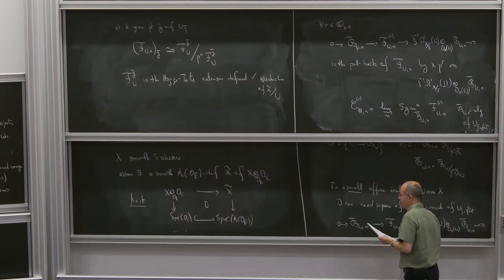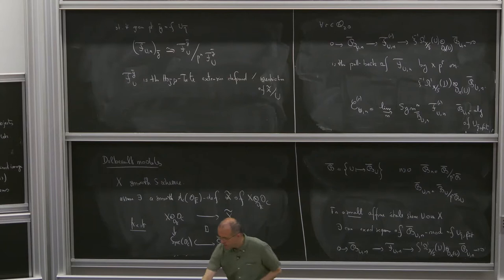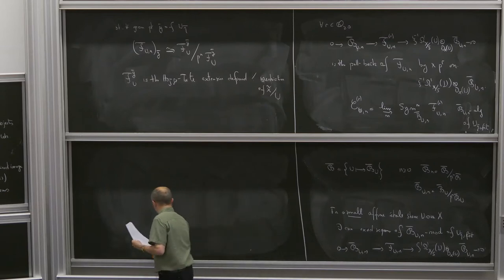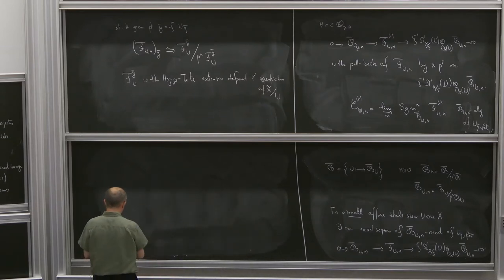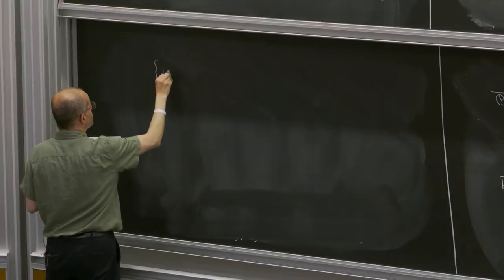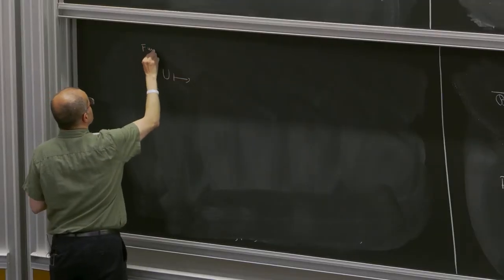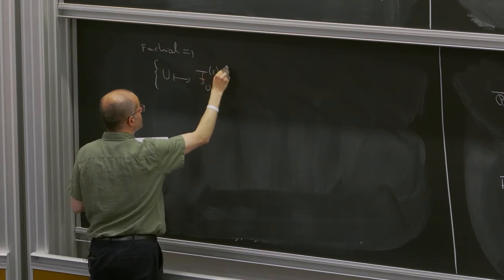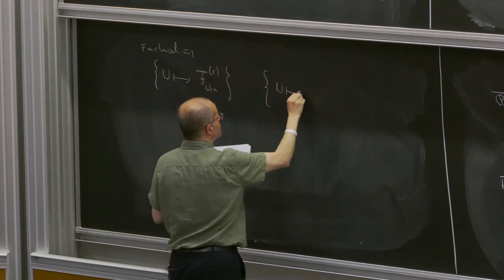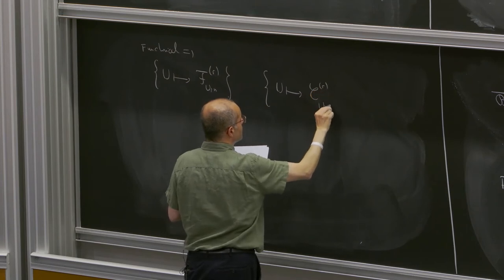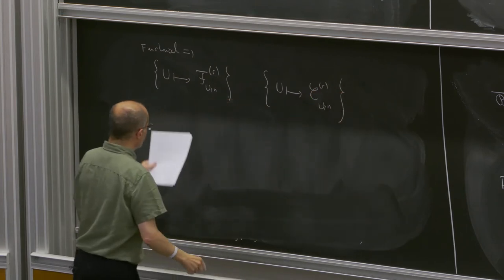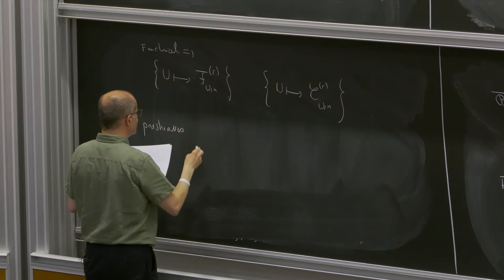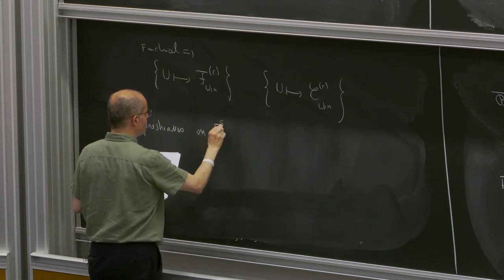This construction is in fact functorial in U. So I can consider the collection of these extensions and algebras: F_{U,N,R} and C_{U,N,R}. These are in fact pre-sheaves, not on E, but on a subcategory of E, which I call E-small. This is a full subcategory of E.